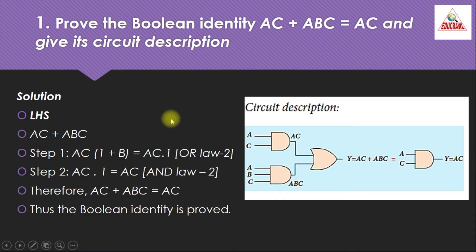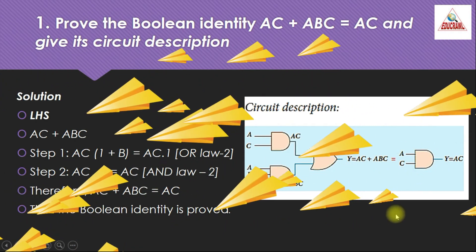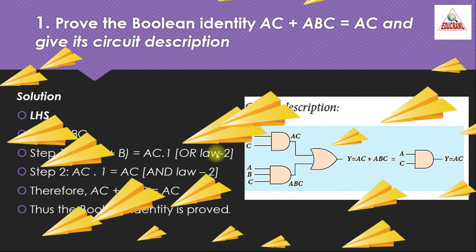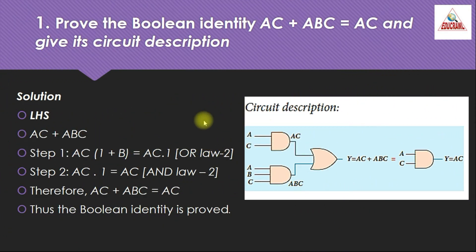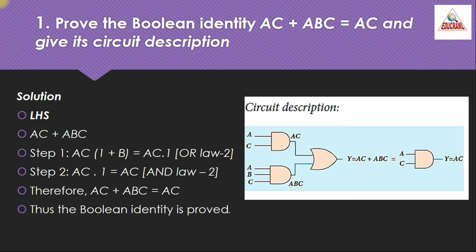So far we have discussed about Boolean algebra. Now using these laws we are going to solve some problems. The first problem is: prove the Boolean identity AC + ABC = AC and give its circuit description. First we have to prove this Boolean identity, then draw the circuit diagram.